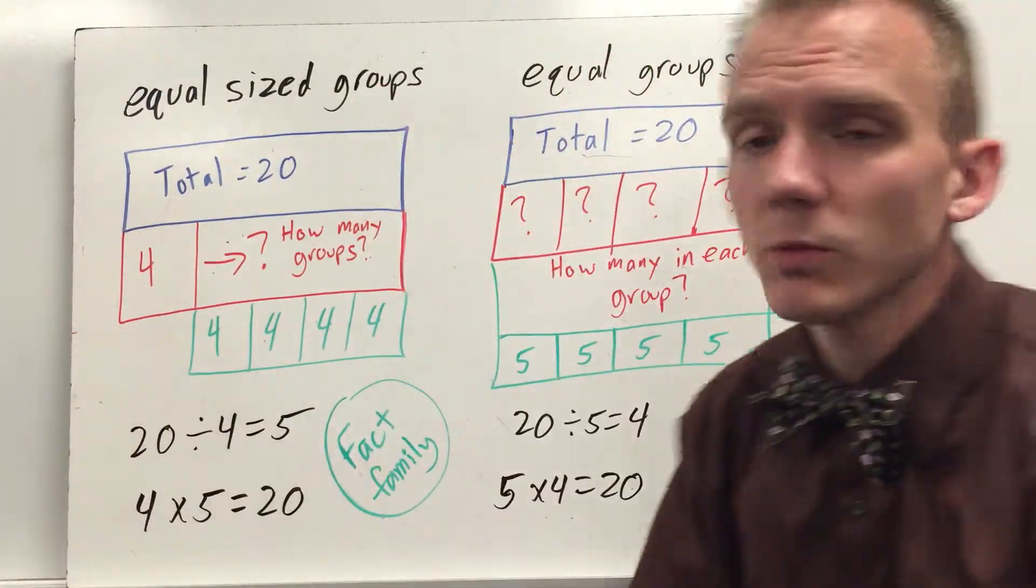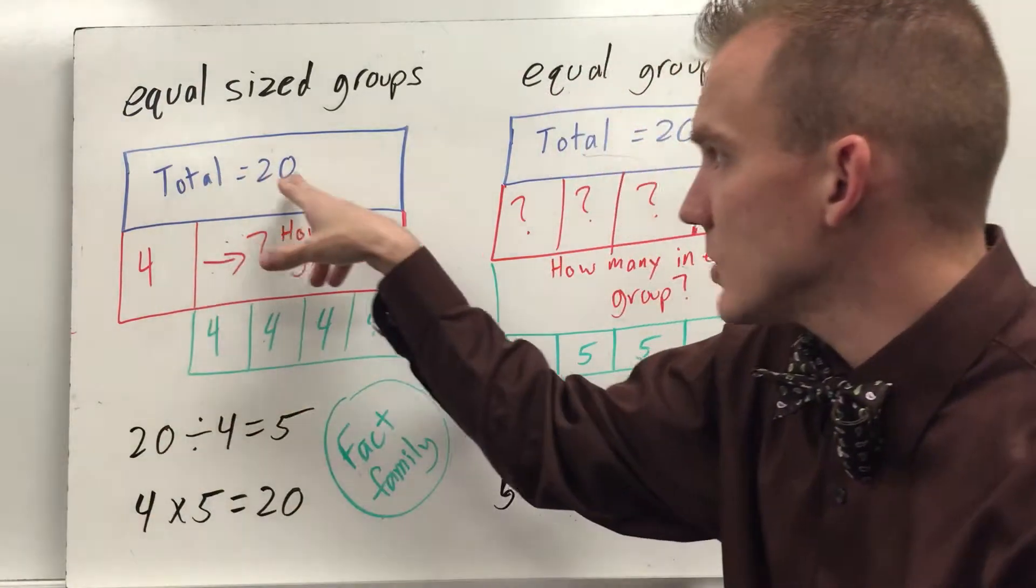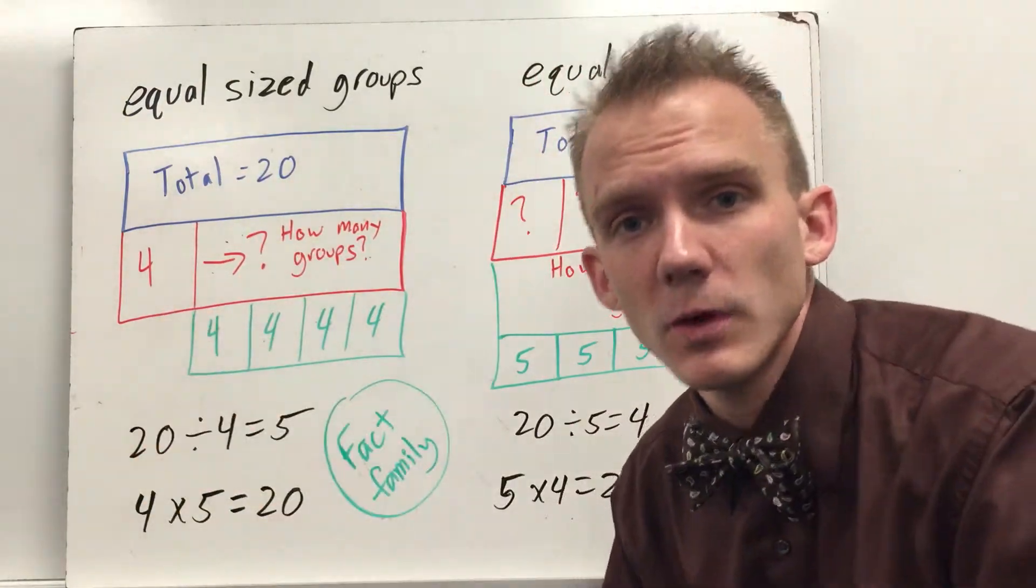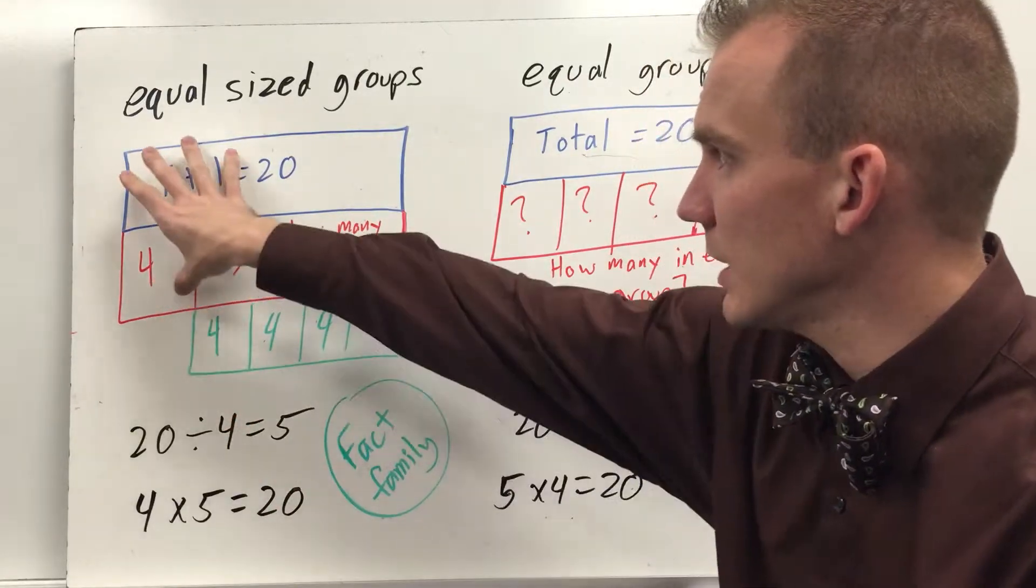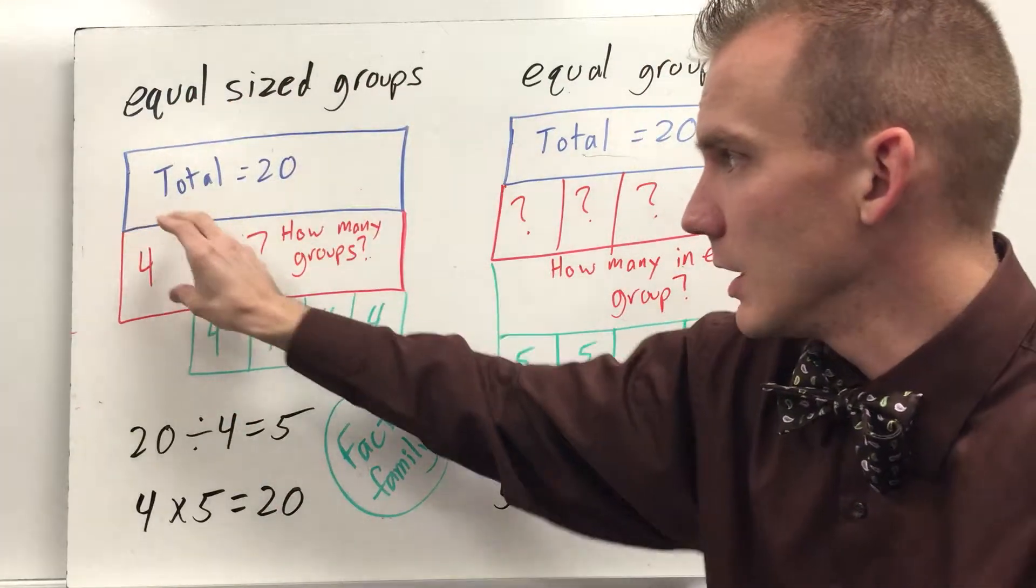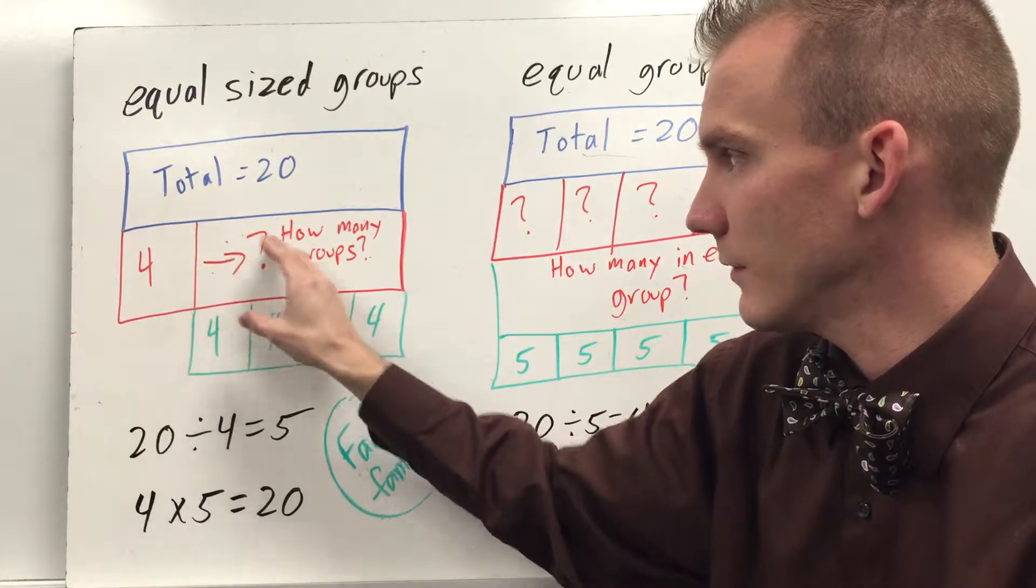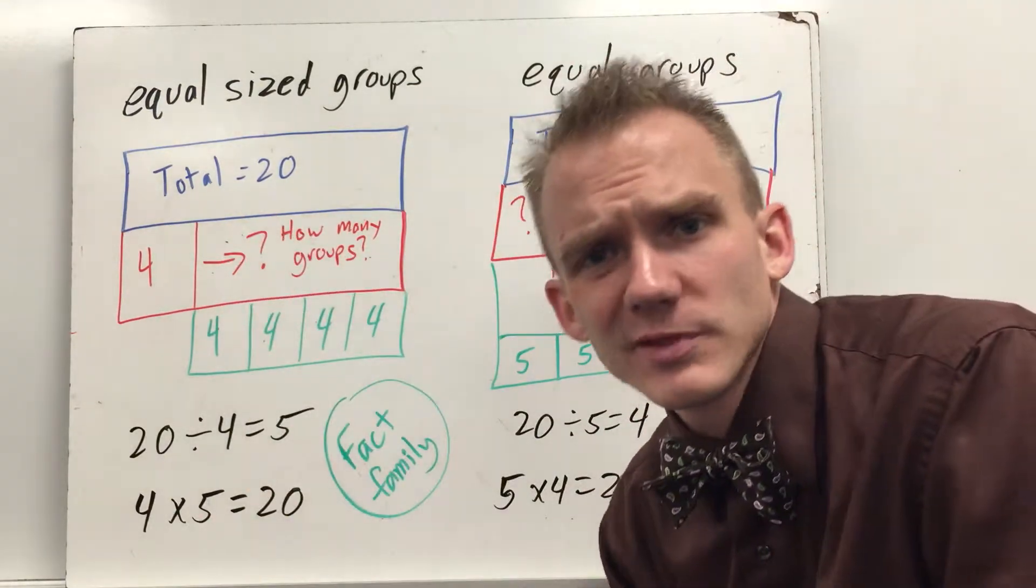So for example, equal sized groups, you would think I have a total of 20 and I want to put that into groups of four. How many groups of four can I get out of 20? So you would kind of illustrate this. You have your total on top, you make one group of four on the bottom and then this question mark, how many groups of four can I make?